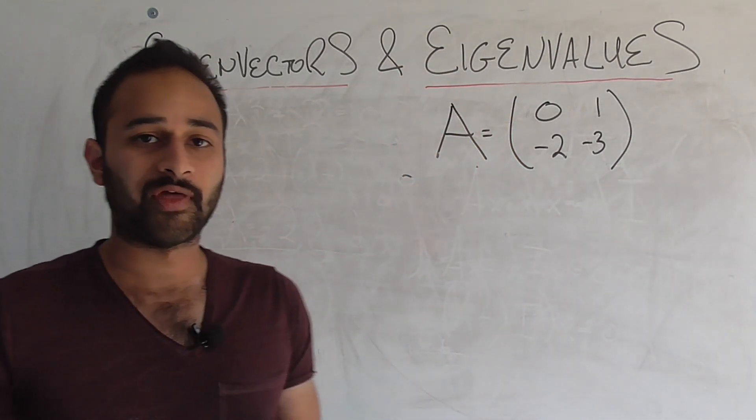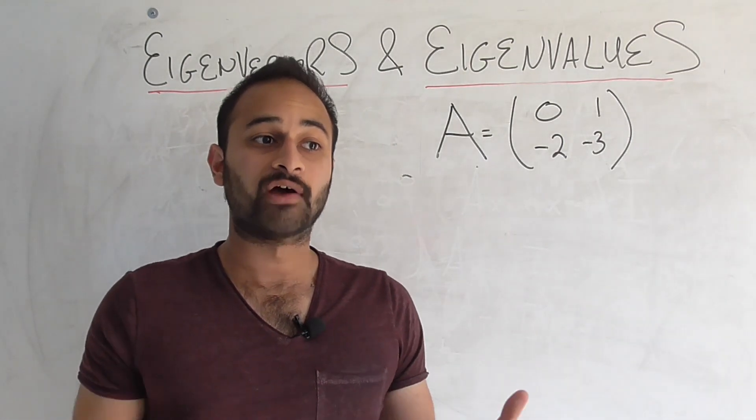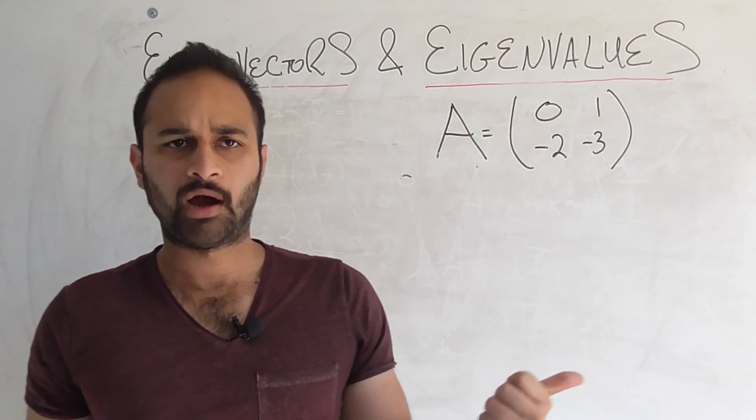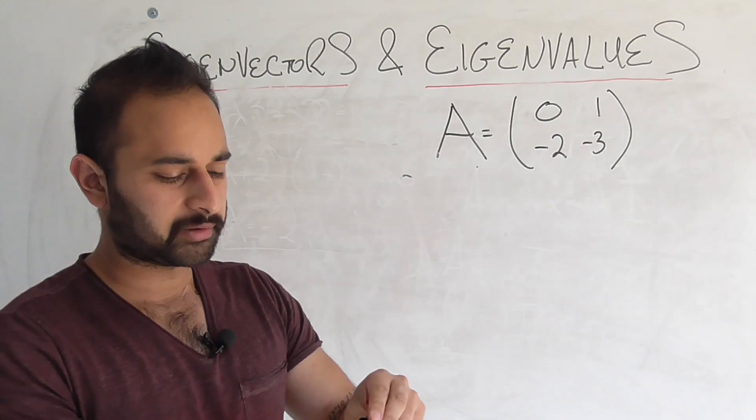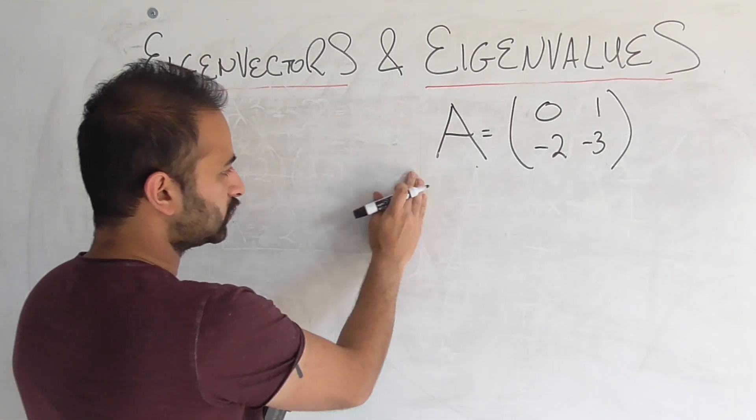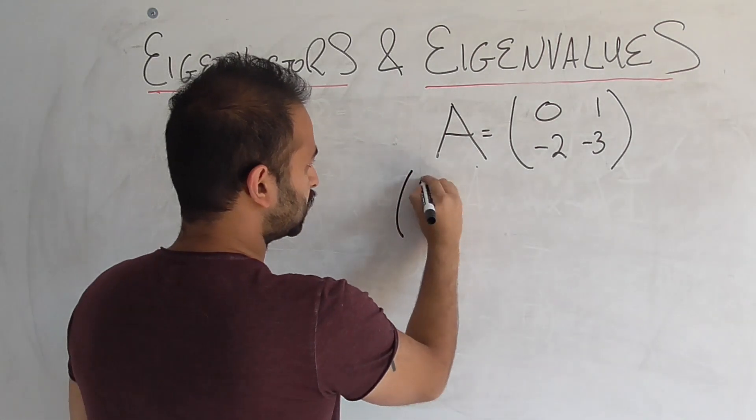Let's get rid of everything on here except the matrix that we care about. So we know now that negative 1 is an eigenvalue of this matrix. How does that help us find the eigenvector? Well, we write again the definition. So we know that A, which is 0, 1, negative 2, negative 3,